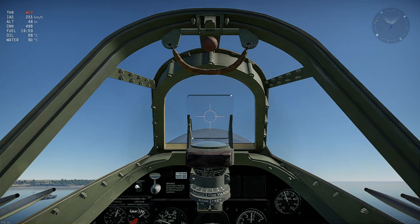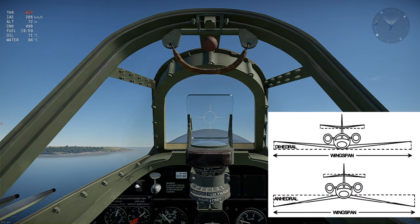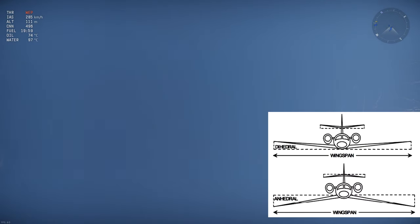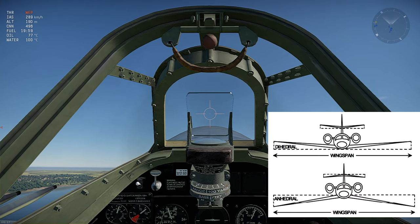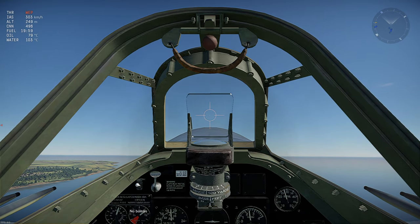Next up is Dihedral. Dihedral is the angle at which the wings are bent upwards. Dihedral is necessary on low mounted wings to provide roll stability. Roll stability is the natural tendency of an aircraft to return to wings level flight after a disturbance in the roll axis.